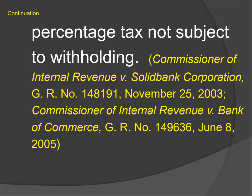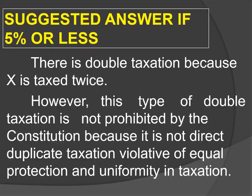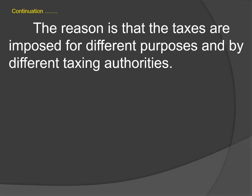Take note of the point of distinction between them. The whole area of double taxation is very, very dangerous. Let's look at how bar problems are framed. Here you have one that is a fact-based problem but very short — so you don't go to the bottom; you go directly and read it from the beginning. A lessor of property pays real estate tax on the premises, real estate dealer's tax based on rental receipts, and income tax on the rentals. S claims that this is double taxation. Decide. As usual, 5% or less gives a very short answer; more than 5% gives an expanded answer.